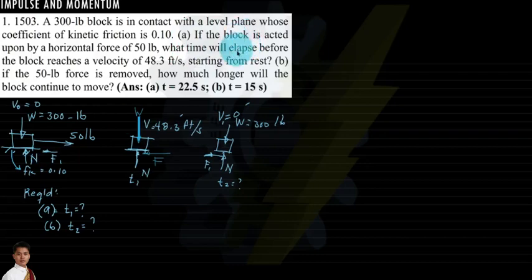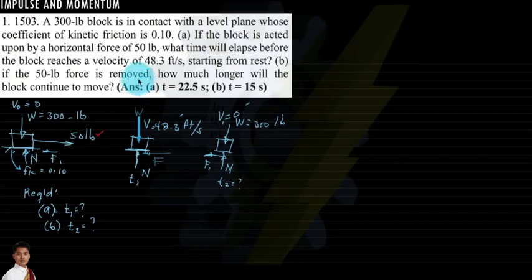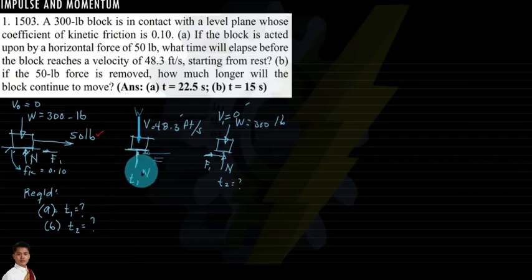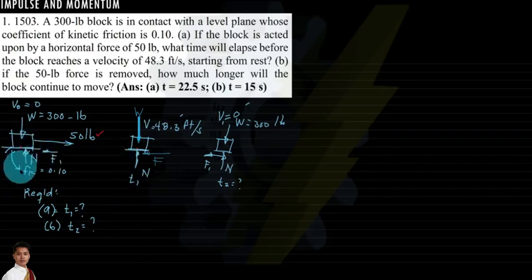Letter A: if the block is acted upon by a horizontal force of 50 pounds, what time will elapse before the block reaches a velocity of 48.3 feet per second? The first unknown is the time t1. Assuming the block starts from rest, t-sub-o is zero, so we are finding t1 from the starting point to the point where the block reaches 48.3 ft/s.